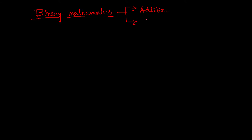So the two primitive mathematical operations are addition and subtraction. We need to learn how to add two binary numbers and how to subtract two binary numbers. Suppose we have two binary numbers: A = 1101 and B = 1011.